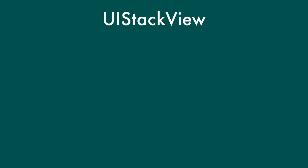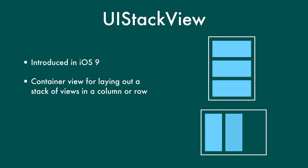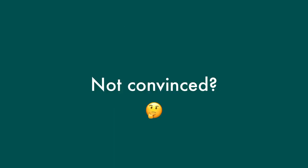UI Stack View — let's talk about it. It was introduced way back in iOS 9, but I know a lot of people still haven't had a chance to really use it very much. It is a container view for laying out a stack of views, either vertically or horizontally in a column or row. The really cool thing about it is that it handles all the layout of its contents for you without you having to create any explicit auto-layout constraints. It's awesome. Let me show you a little demo.